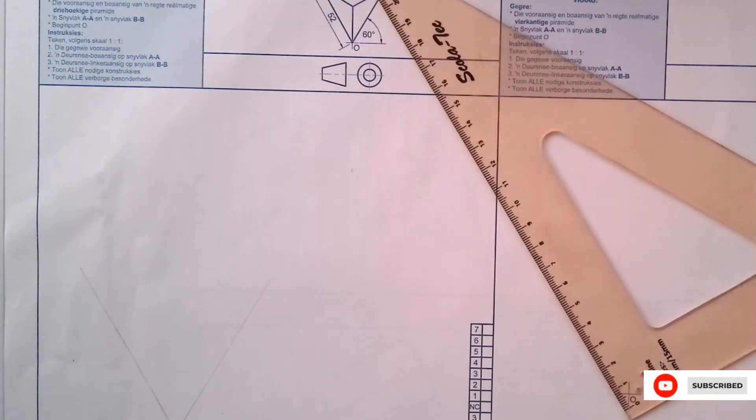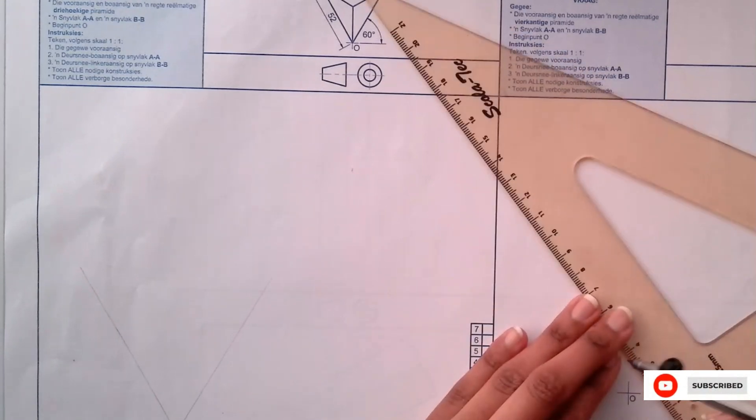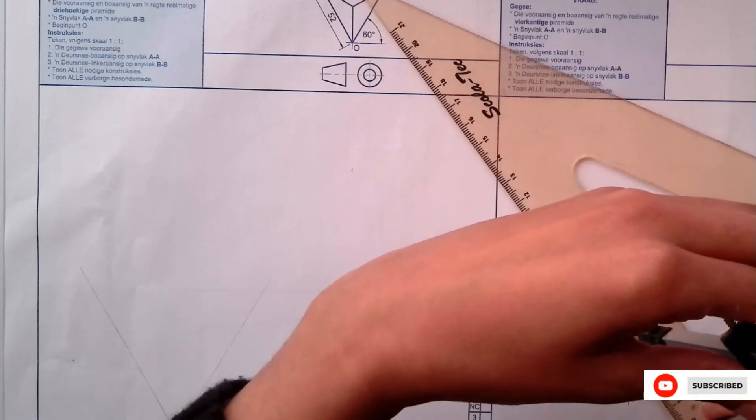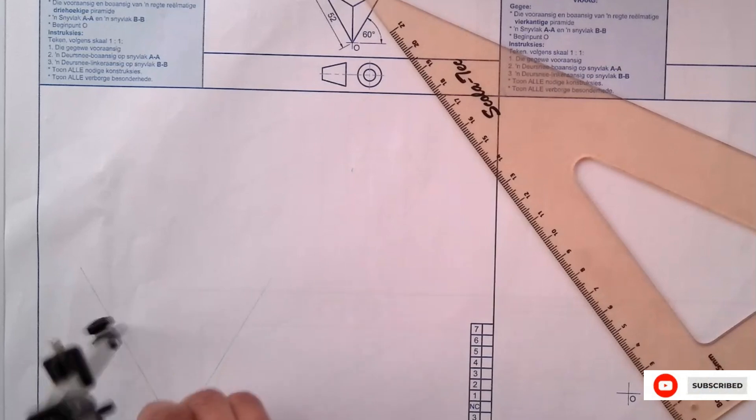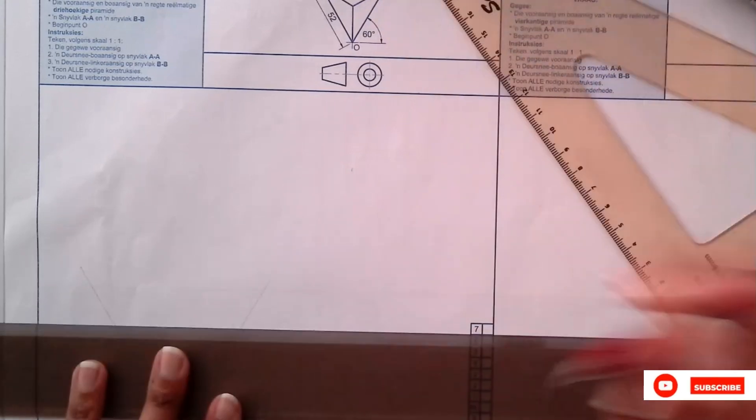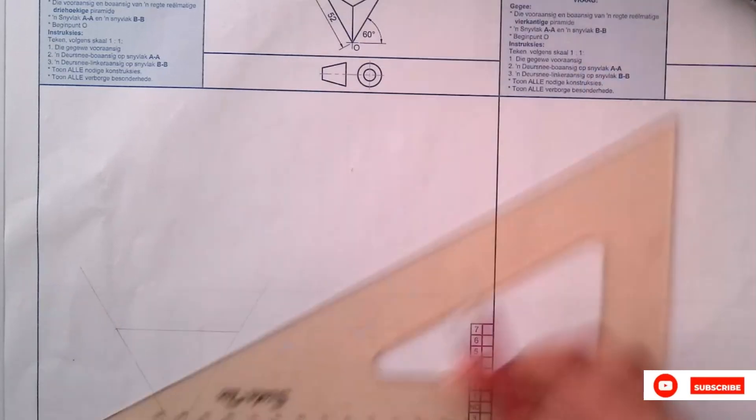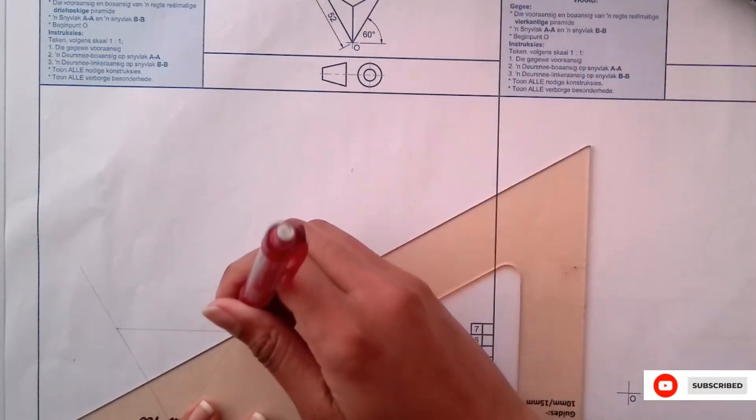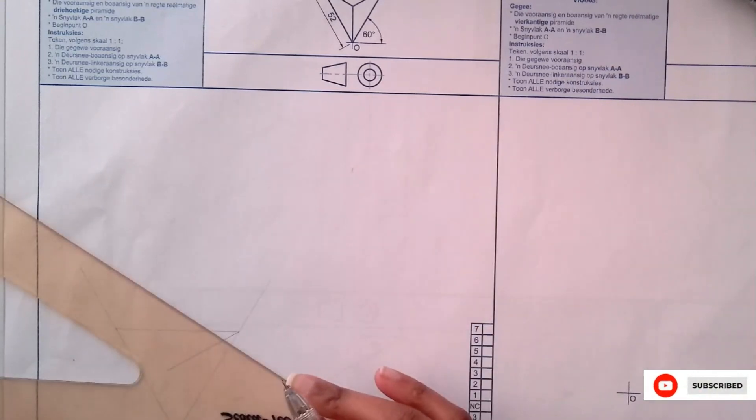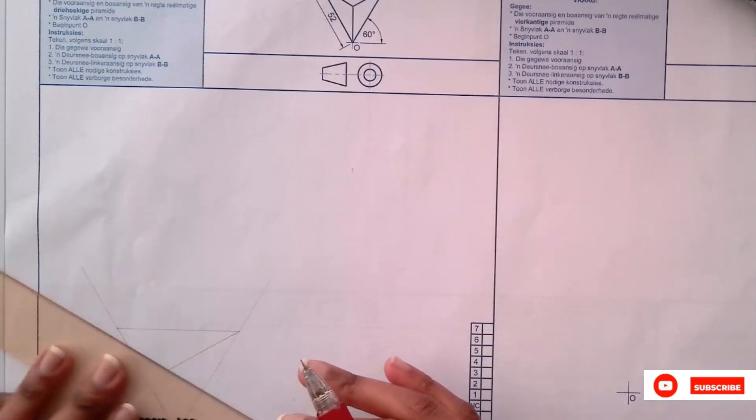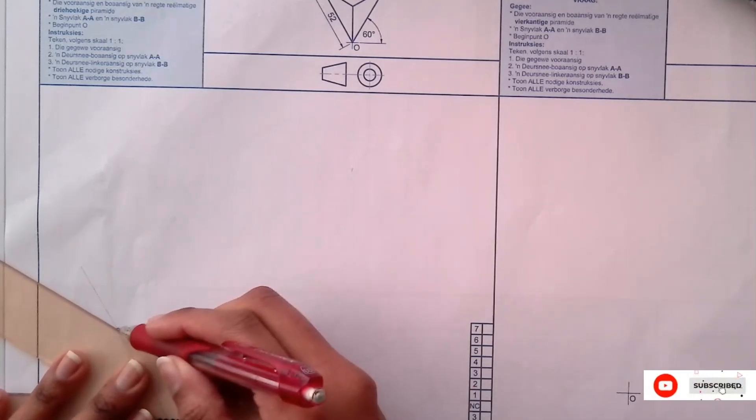The length of your triangle is 52. I'm just going to mark it here. I'm going to use 30 degrees to draw the lines that make up the apex of your pyramid.